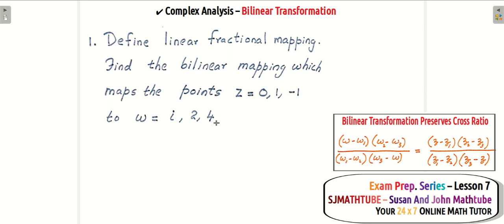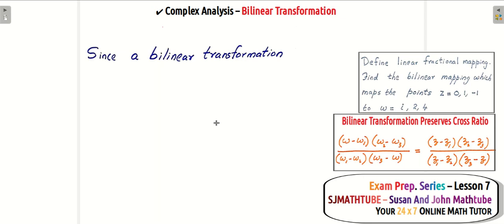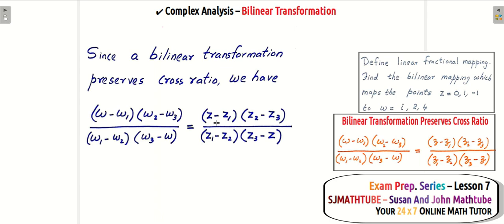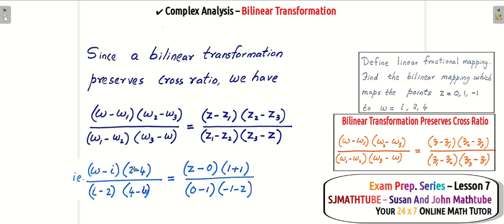It's really easy. What you do is write that the bilinear transformation preserves cross ratio, and remember the formula. It's very easy to remember: it's just W, W1, W2, W3, and here also W1, W2, W3 and W. The same thing goes for Z. These are the inputs and these are the outputs. Let's substitute. We have Z1, Z2, Z3 and W1, W2, W3 — just input all those values.